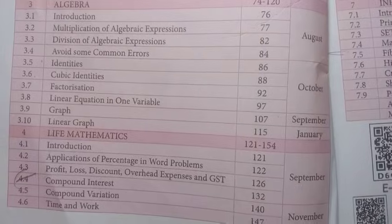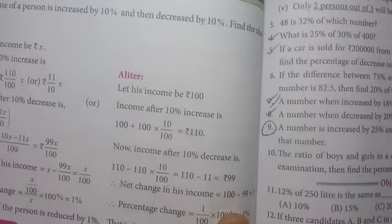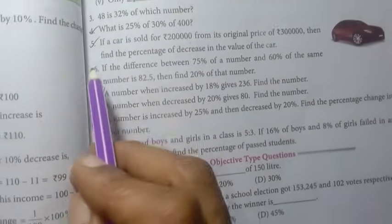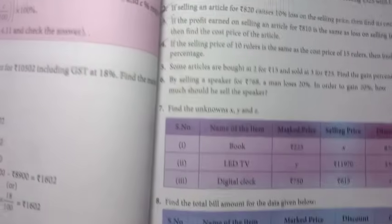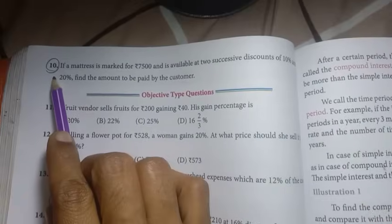Measurements is over, algebra is over, then graph is over. Next is life mathematics. On page 121, then page 125, exercise 4.1: fourth sum, fifth, seven, eight, nine are important.